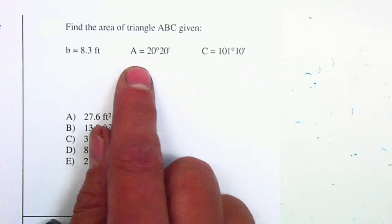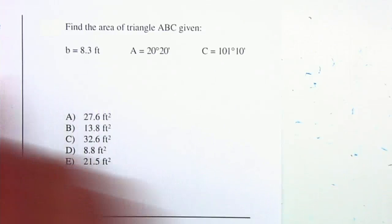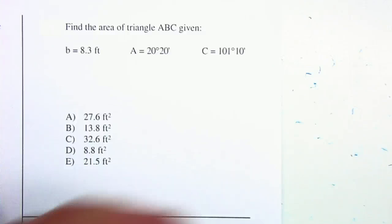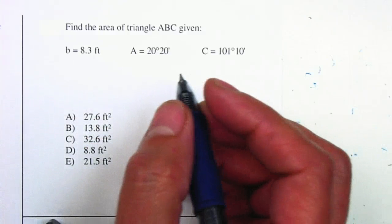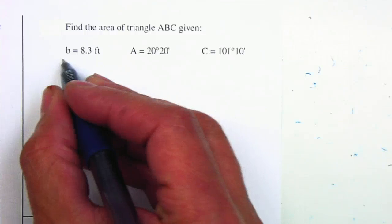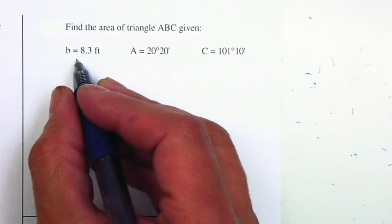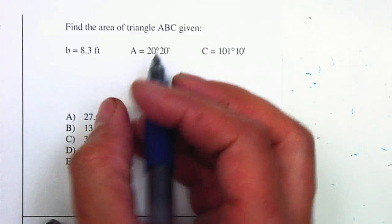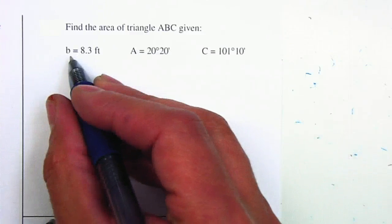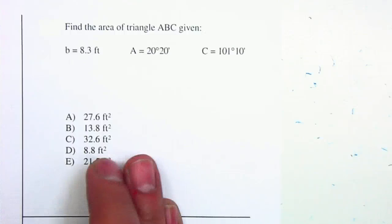Remember that in order to find the area, we need two sides and an angle in between. In this case we only have one side, so I need to find another side. I'm going to be looking for either A or B. Let's go and find A.